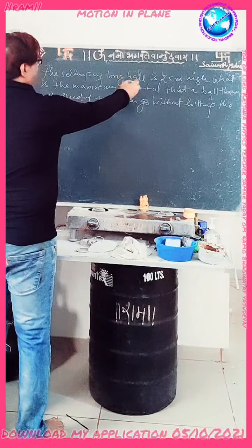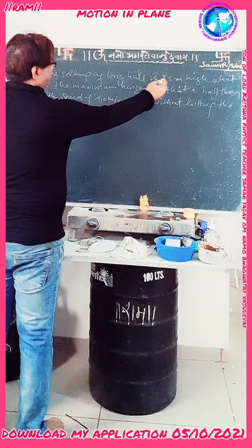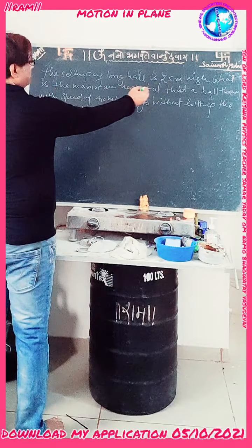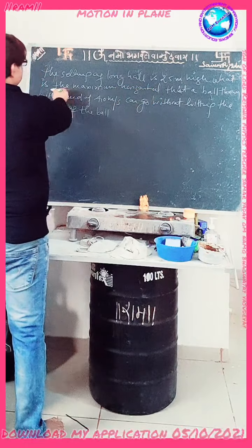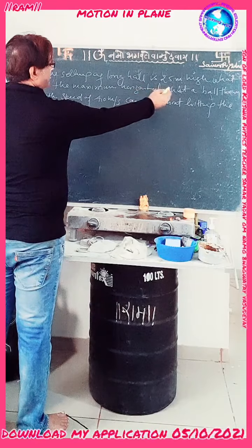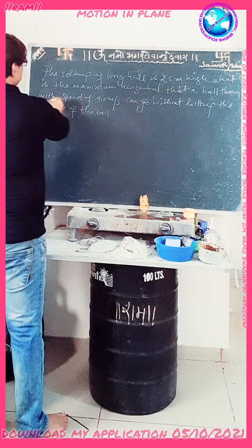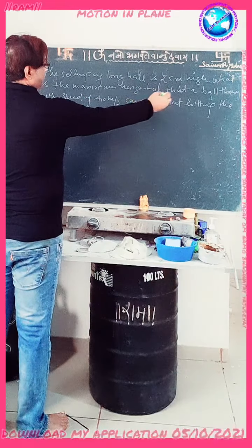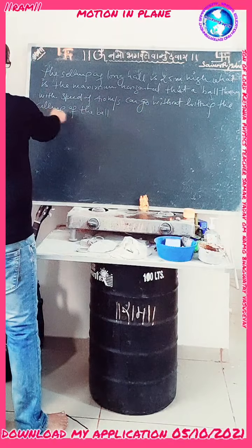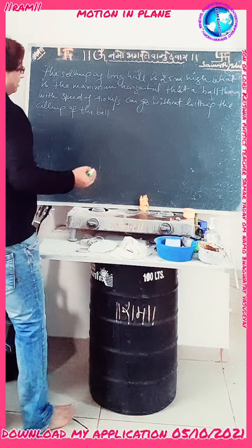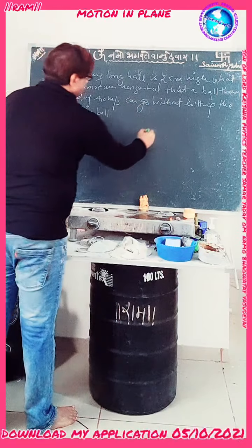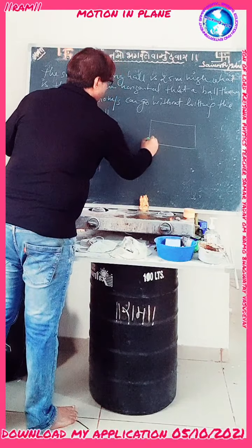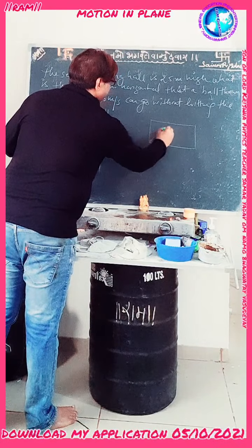The ceiling of a long hall is 25 meters high. What is the maximum horizontal distance that a ball thrown with a speed of 40 meters per second can travel without touching the ceiling? Suppose the ball is thrown from a point and moves along a curved path.